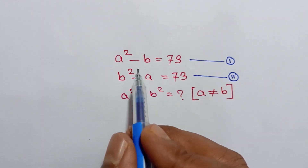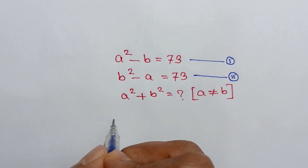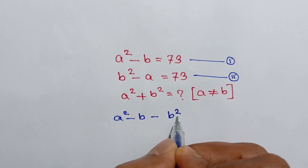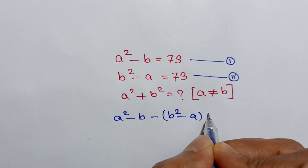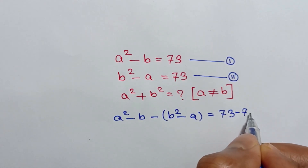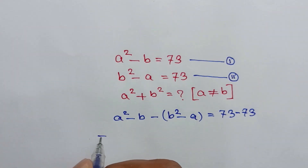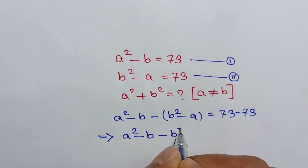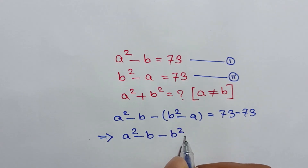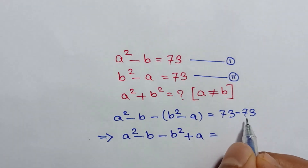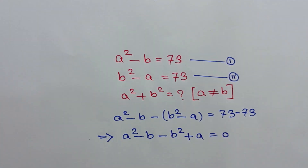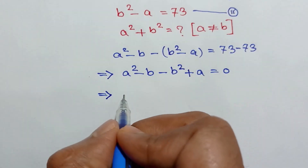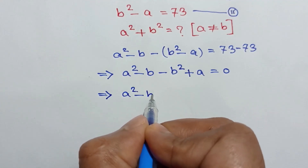If we subtract equation two from equation one, we can write: a² - b minus (b² - a) = 73 - 73, or a² - b - b² + a = 0.